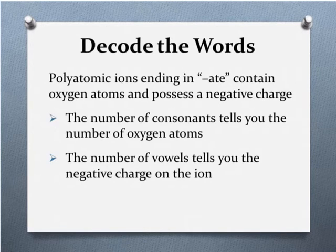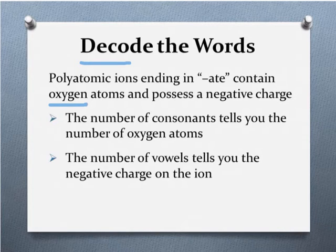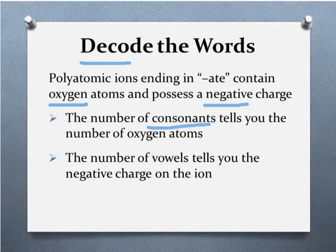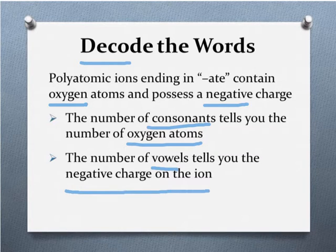Now we're ready to decode the words. Polyatomic ions ending in -ate contain oxygen atoms and they always possess a negative charge. The number of consonants is going to tell you the number of oxygen atoms, and the number of vowels is going to tell you the magnitude of the negative charge on that ion.